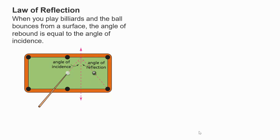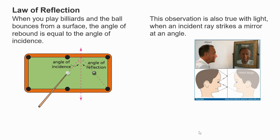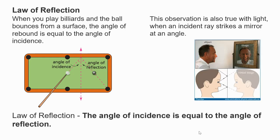Law of reflection. When you play billiards and the ball bounces from a surface, the angle of rebound is equal to the angle of incidence. This observation is also true with light, when an incident ray strikes a mirror at an angle. The law of reflection states that the angle of incidence is equal to the angle of reflection.